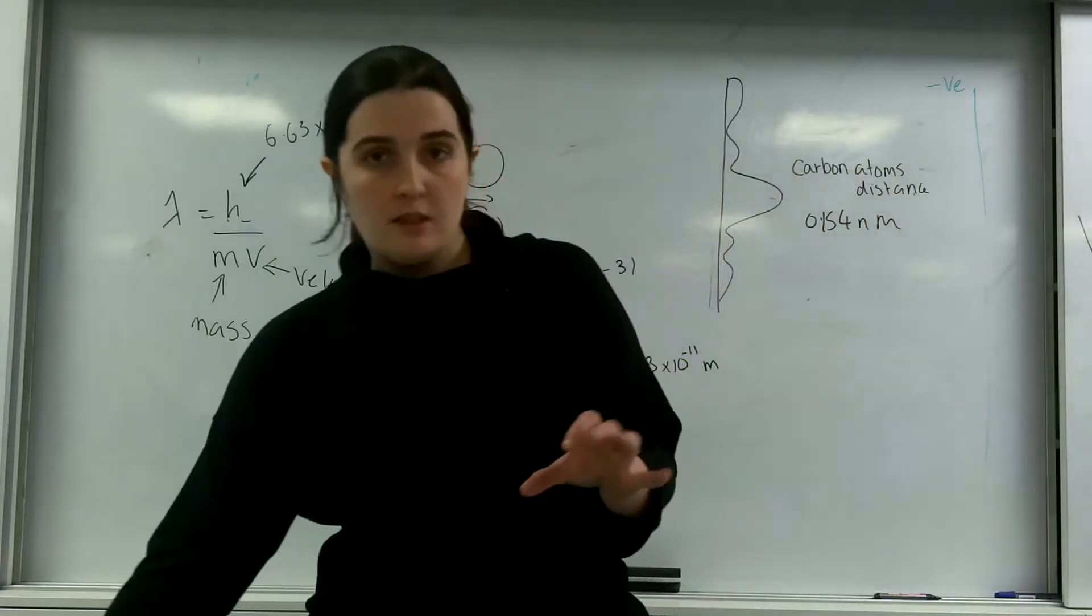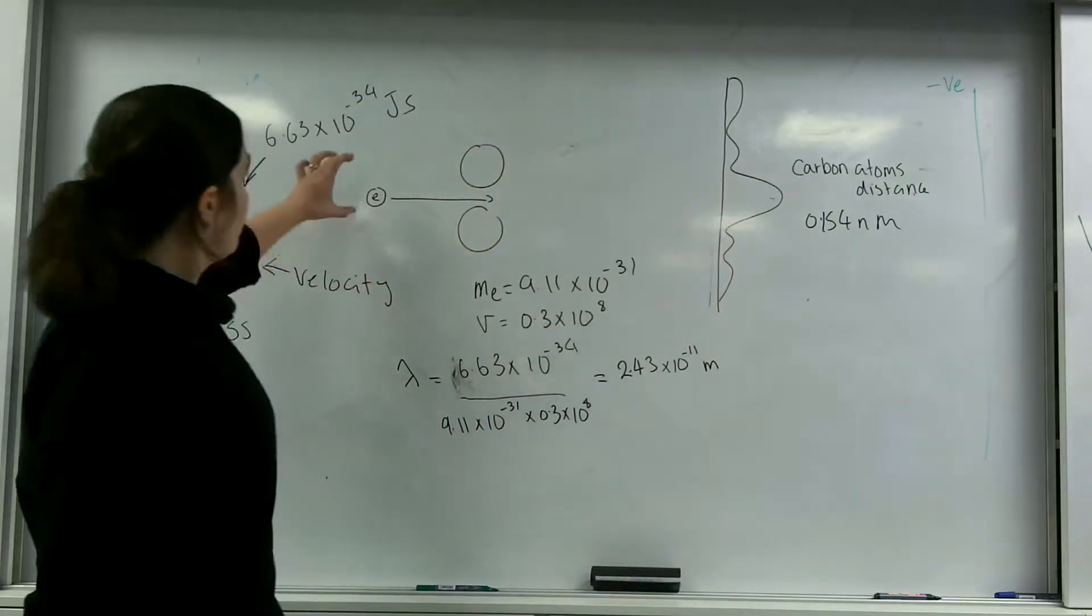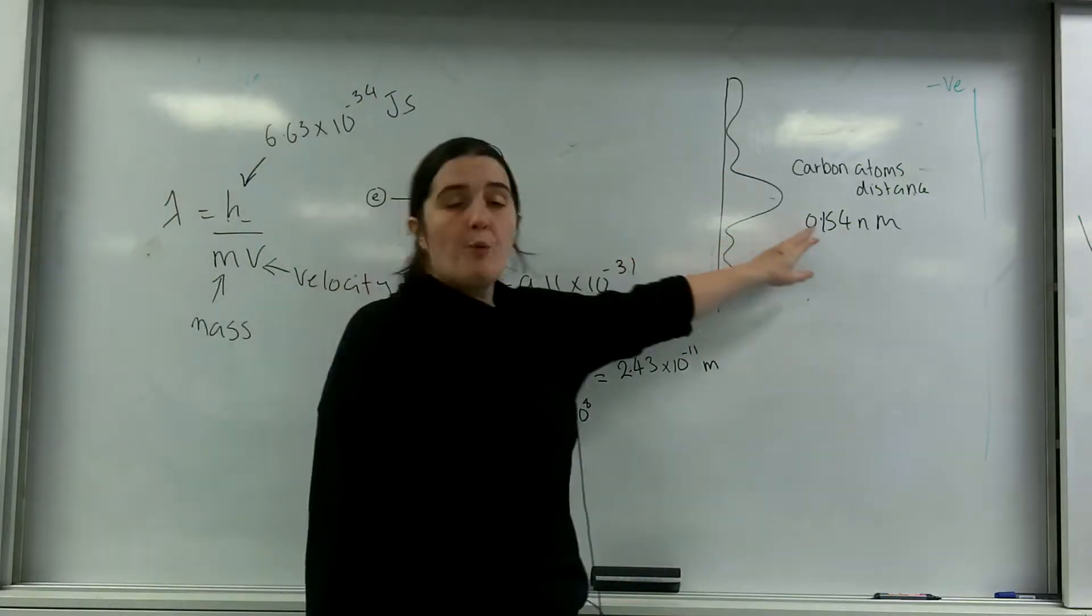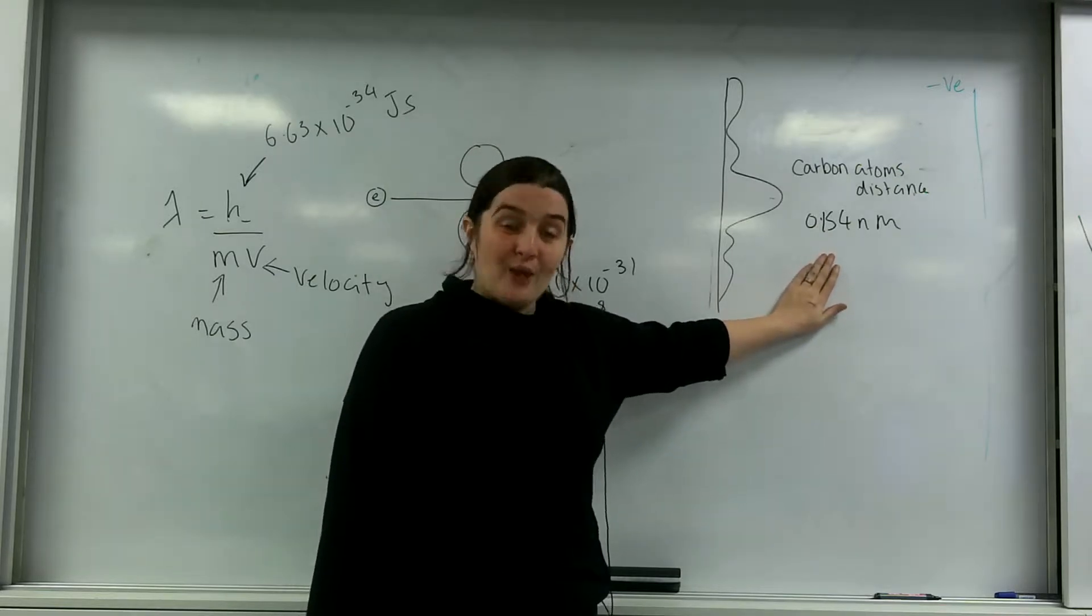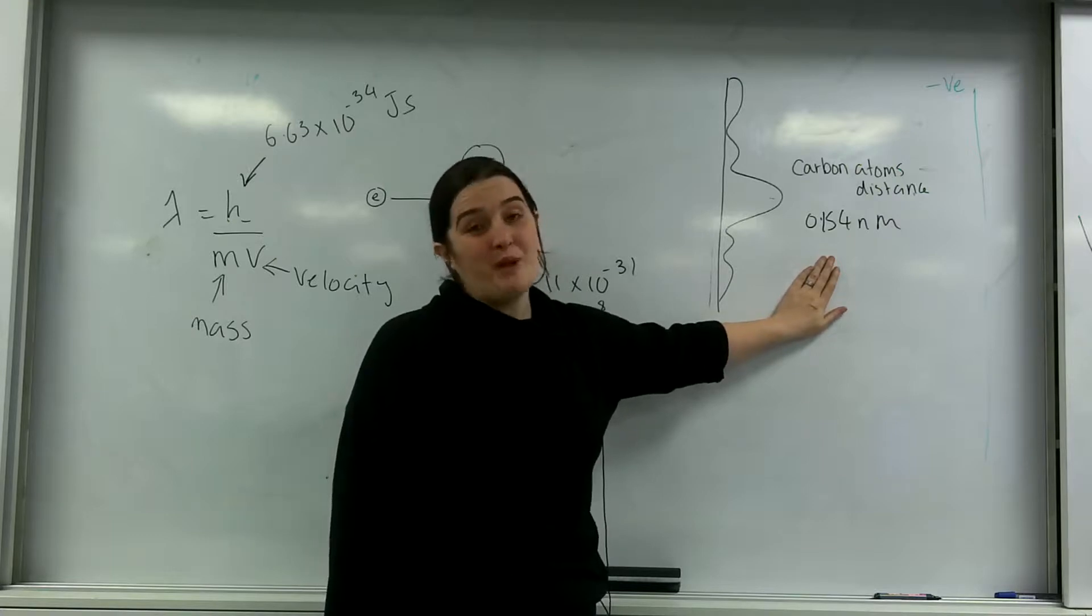The distance between the two carbon atoms here is 0.154 nanometers. I want to know the angle for the first maxima.